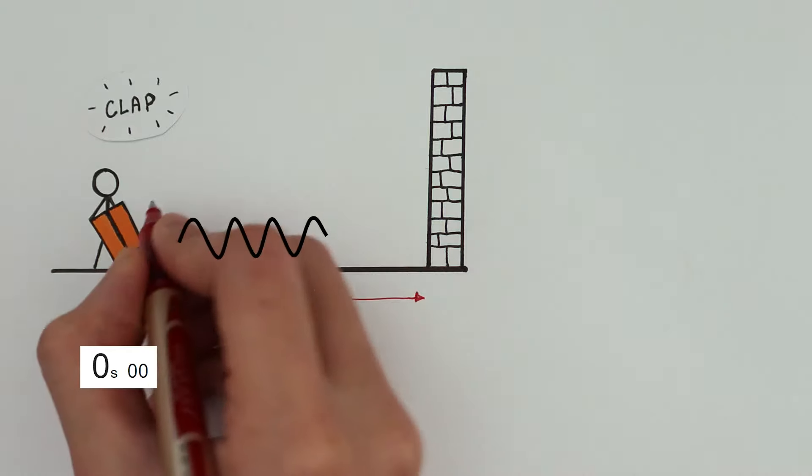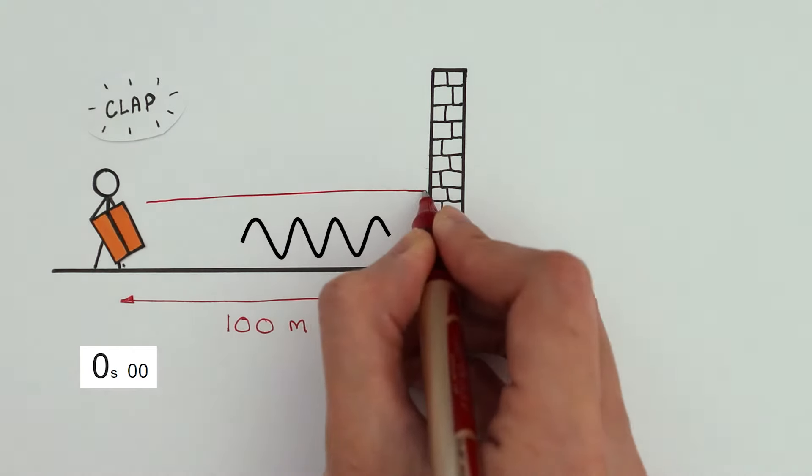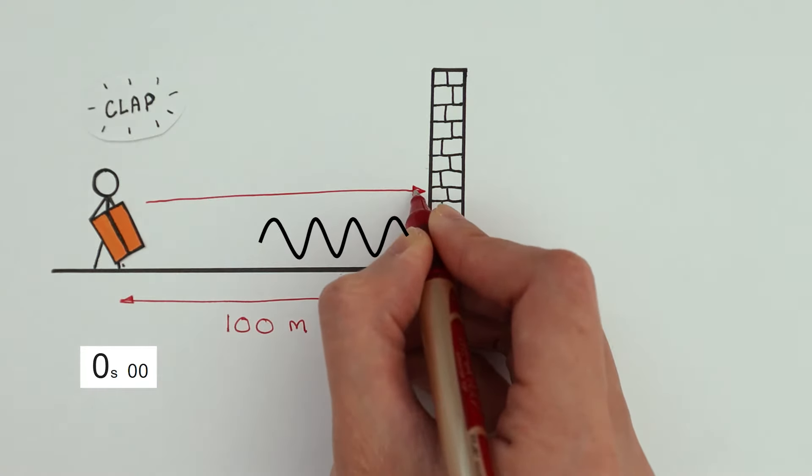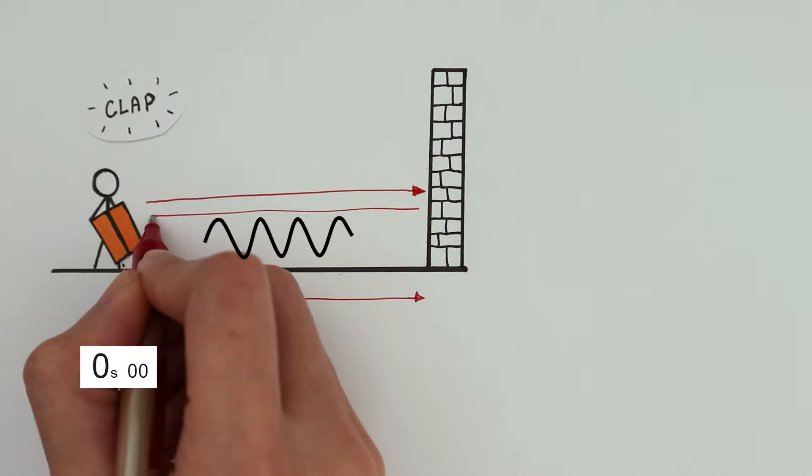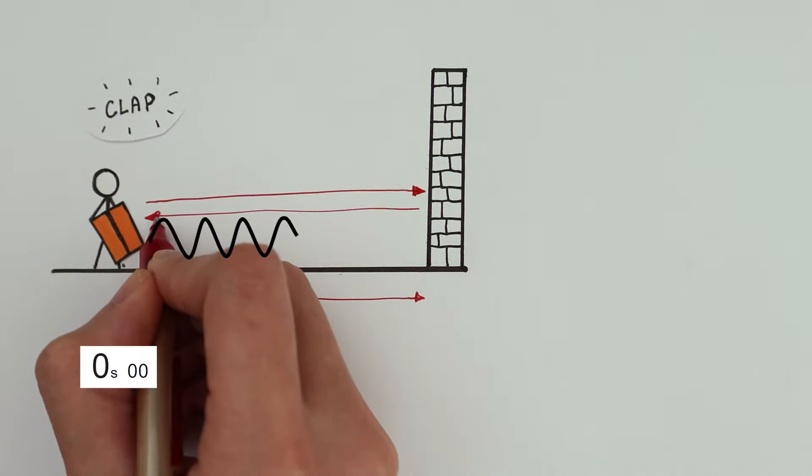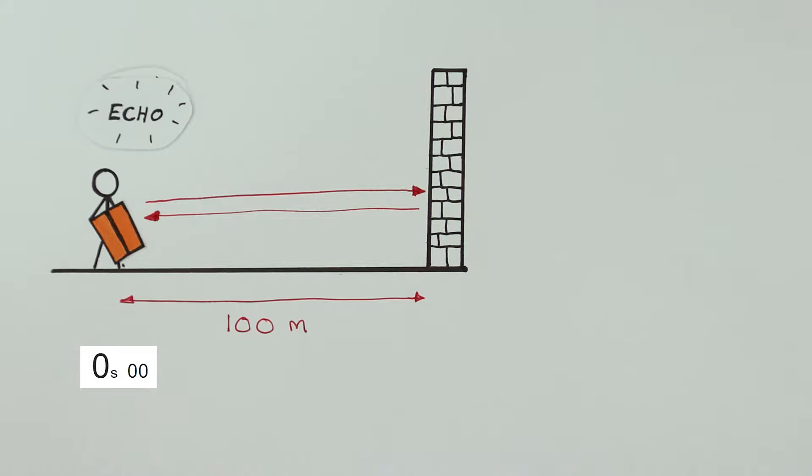When he claps the blocks together, the sound wave of the clap will travel towards the wall, it gets reflected at the wall and then travels back towards us so that we can hear its echo. So we're going to start the timer when he claps, stop the timer when we hear the echo.